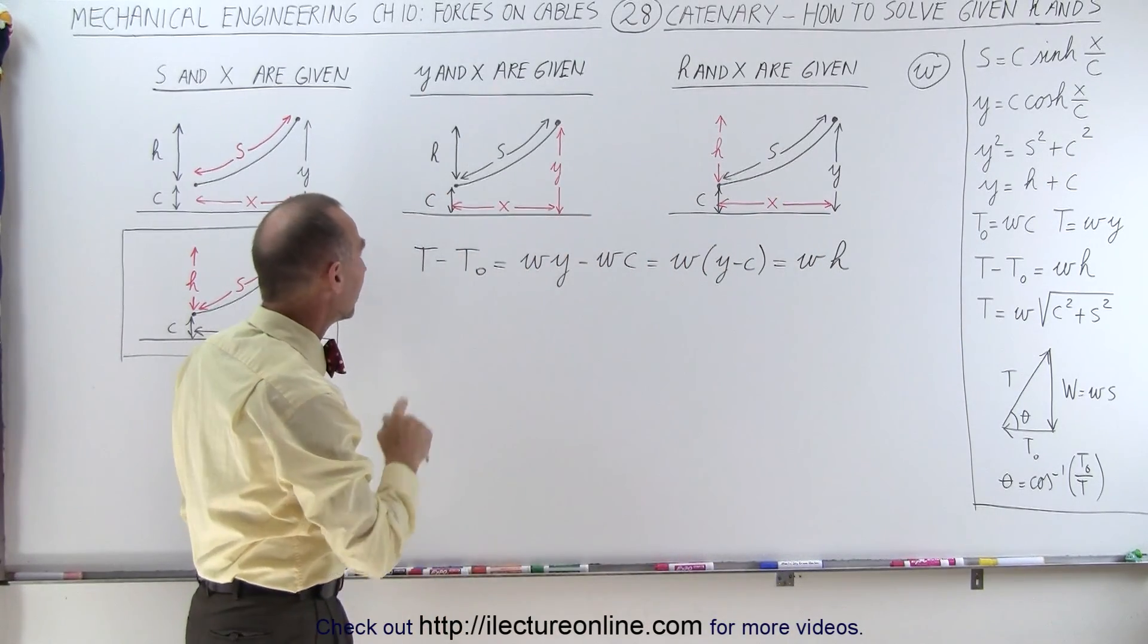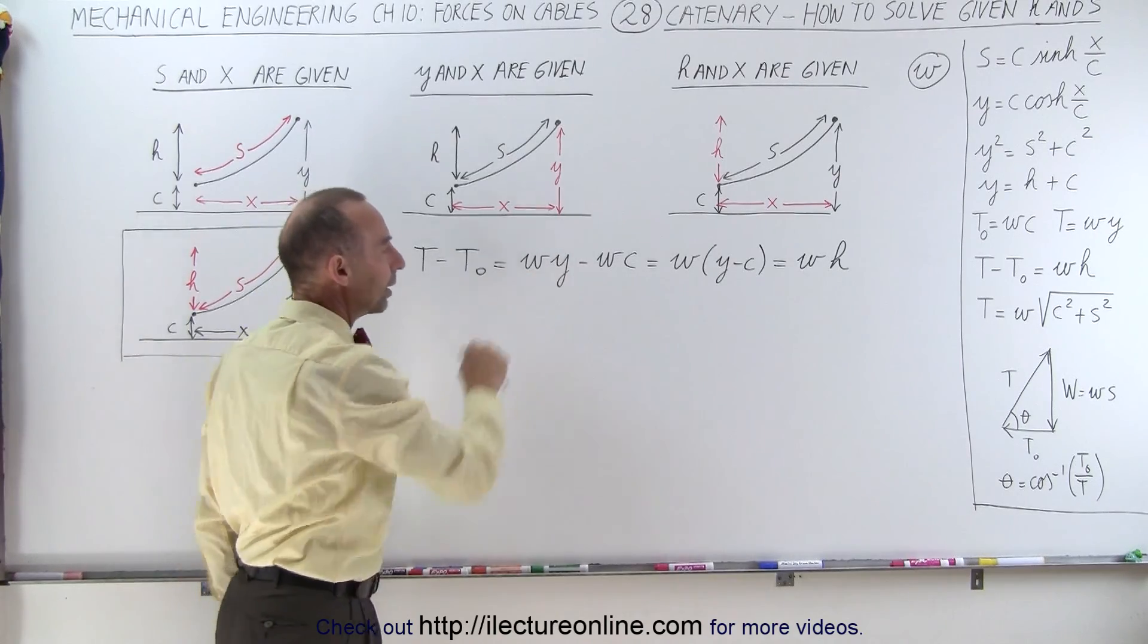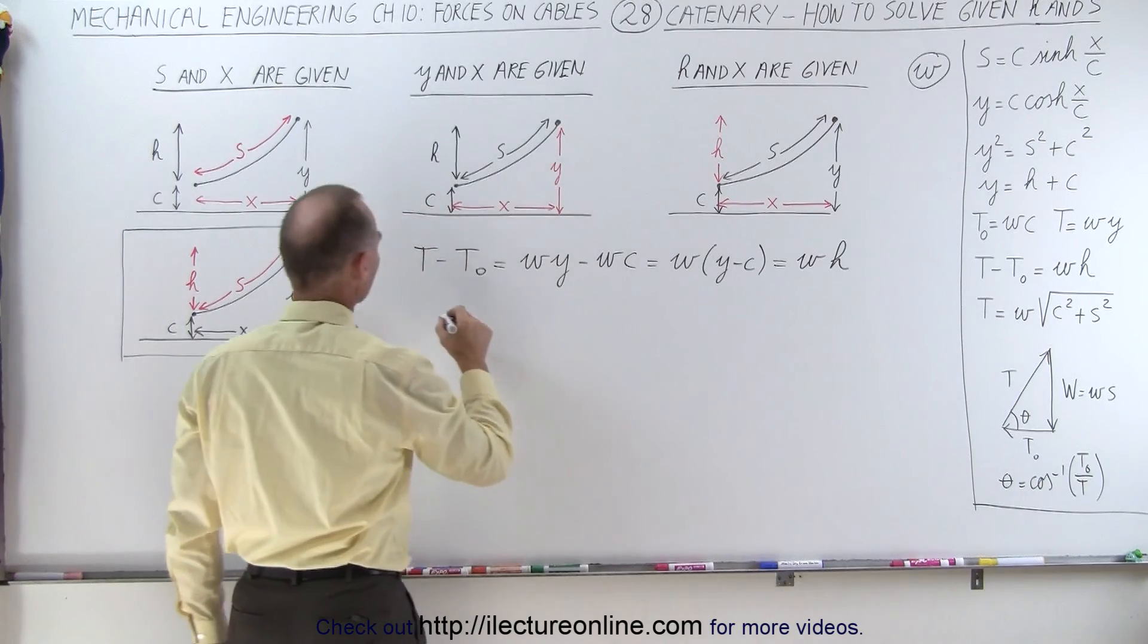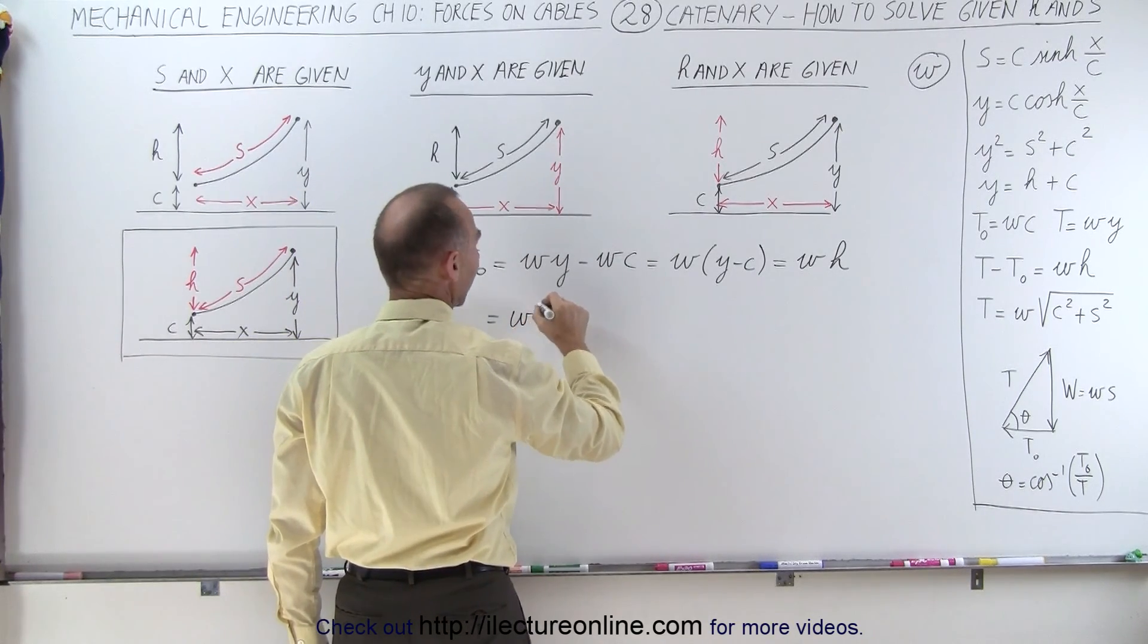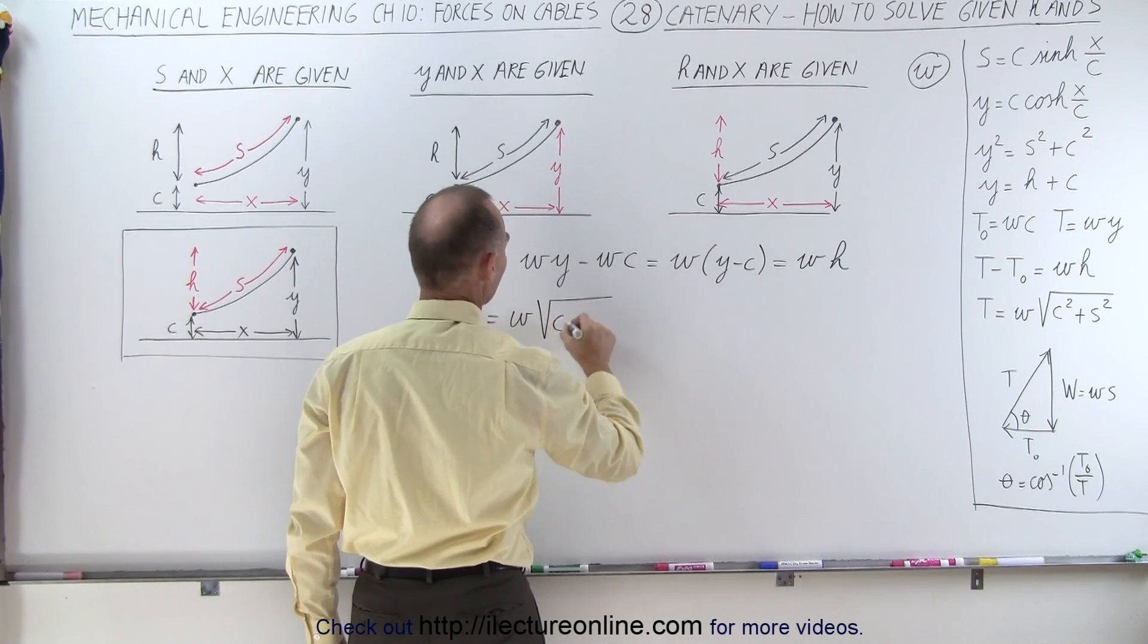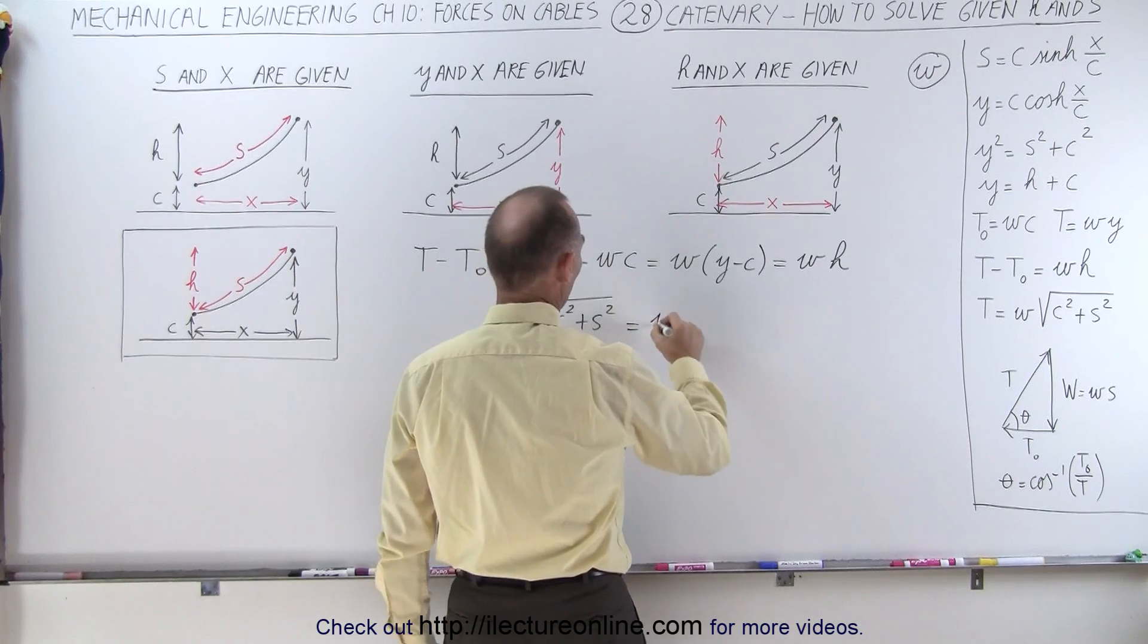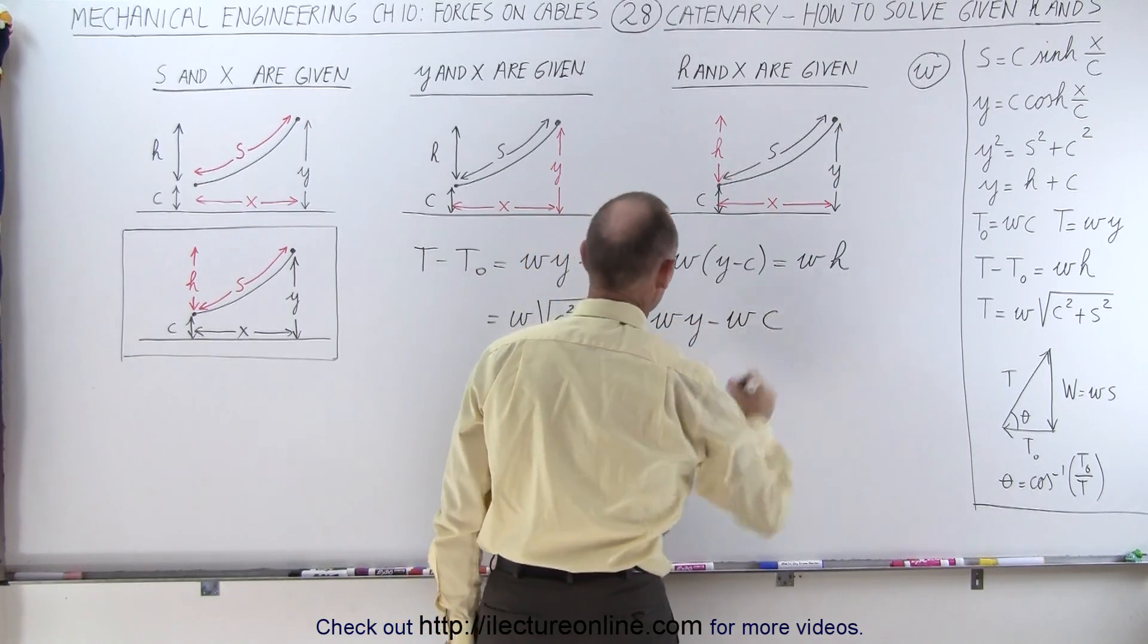Then we're going to do this again, but in this case, instead of writing T equals the weight per unit length times Y, we're going to use this equation right here. So we're going to write this is equal to weight per unit length times the square root of C square plus S square is equal to weight per unit length times Y minus weight per unit length times C.